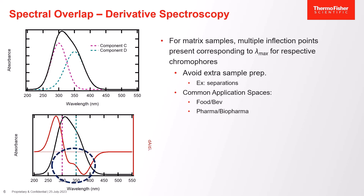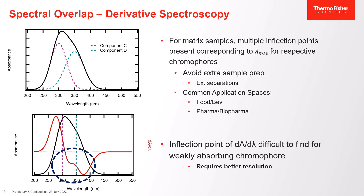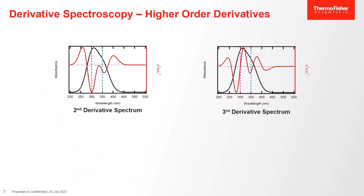Directing attention to the graphic at the bottom: the inflection point for this weaker feature is a little more difficult to see. Inflection points for weakly absorbing chromophores or chromophores which are fairly close to one another can be difficult to resolve, and we need a technique to allow for better resolution to qualitatively determine where that peak lies. This is where we can turn to higher order derivatives. While not used as often as the first derivative, they are cited in literature as methods of analysis for a variety of different systems.